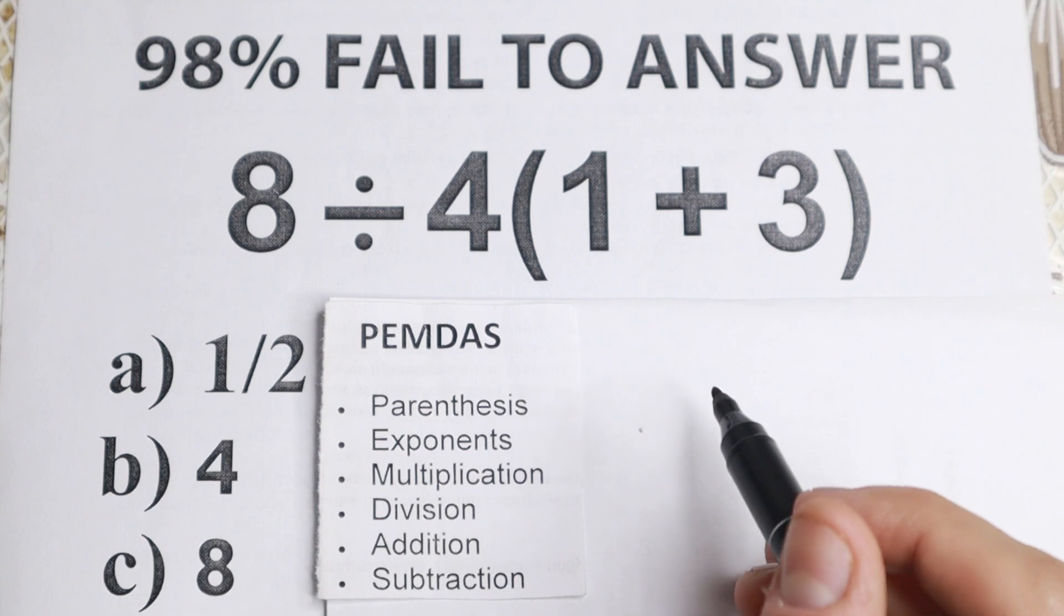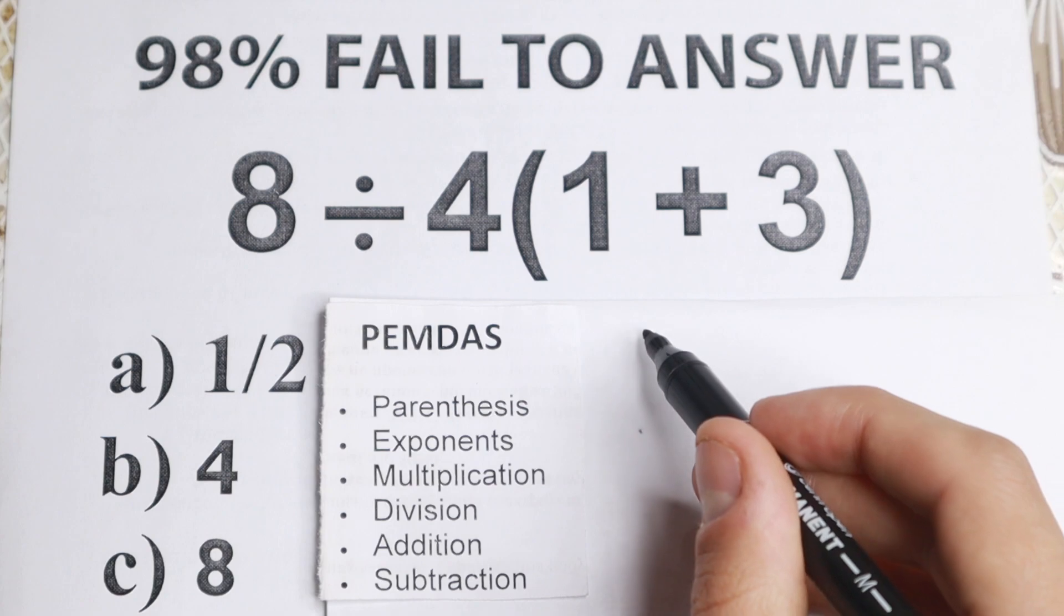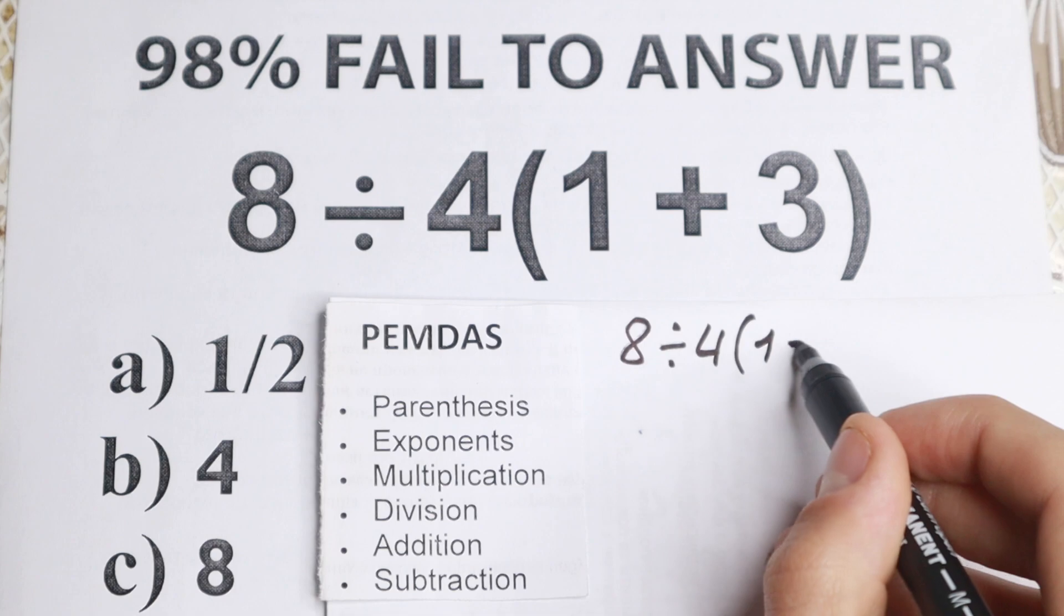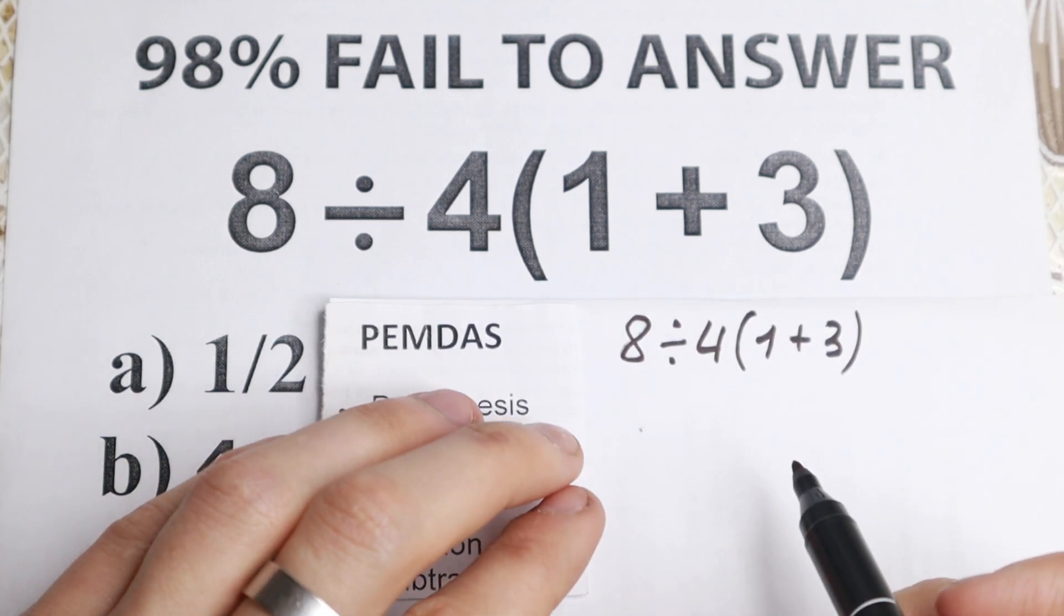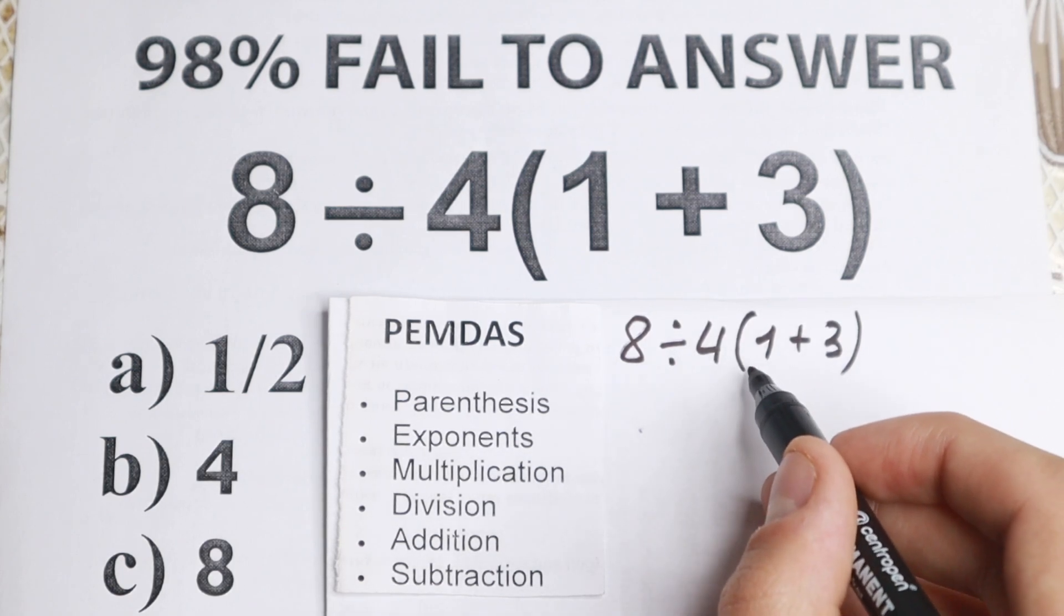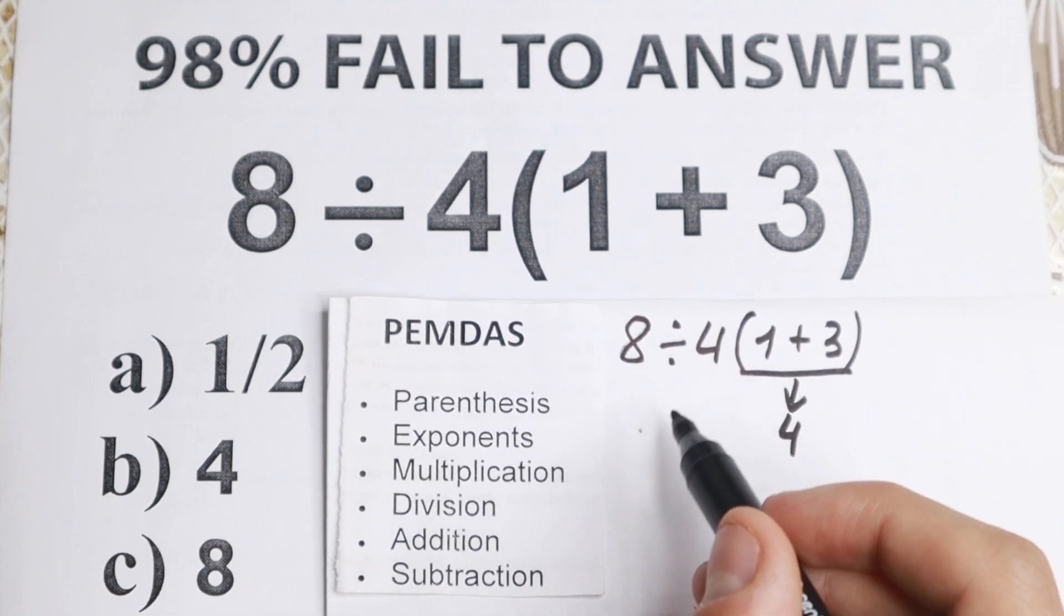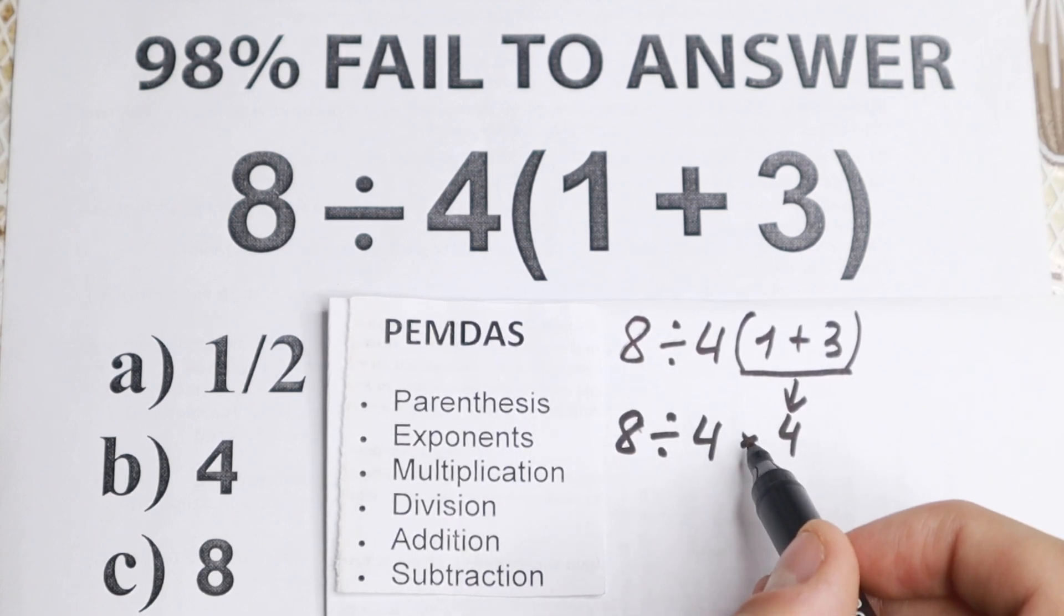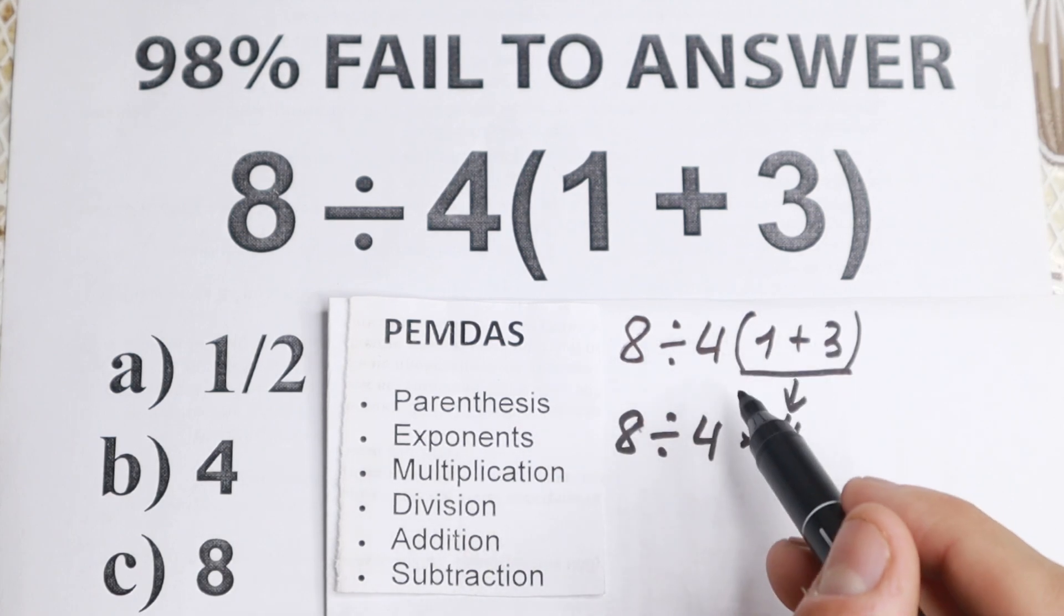So according to PEMDAS, and moreover to BODMAS as I showed before, we have parentheses as a first step. So I write 8 divided by 4, and 1 plus 3 in parentheses. According to both methods, to both orders of operation, we need to start from these parentheses right here. So 1 plus 3 in parentheses gives us 1 plus 3 equal to 4. And we have from the beginning 8 divided by 4 and right here multiplying, so from this expression we have this one.